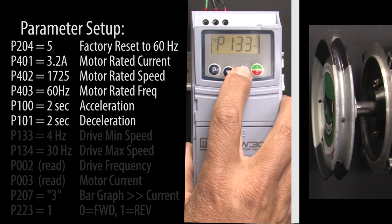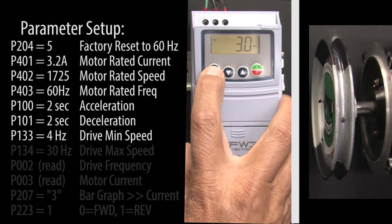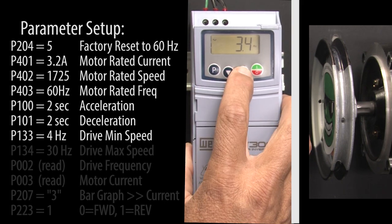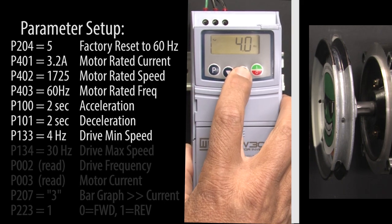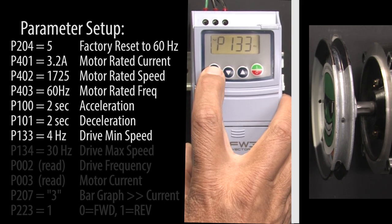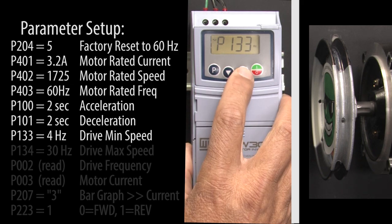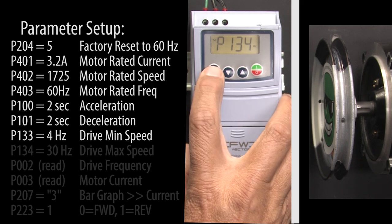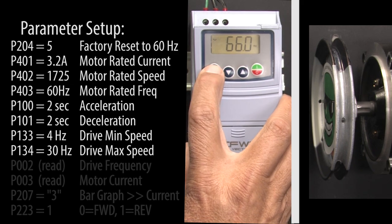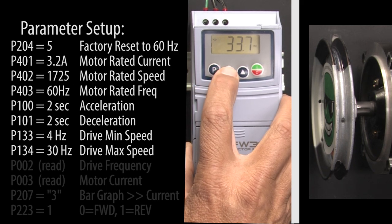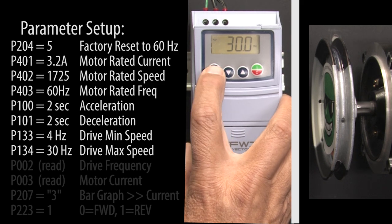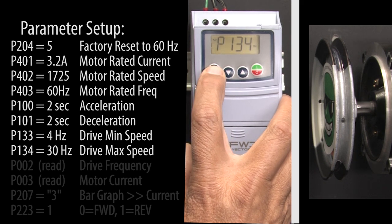Scroll to the min speed parameter — let's make that 4 Hz. Hit P to accept that. Scroll to the max speed parameter, hit P, let's change our max speed to 30 Hz. Hit P to accept that.